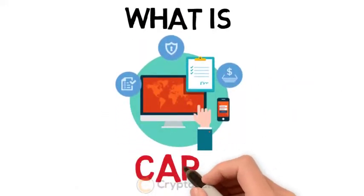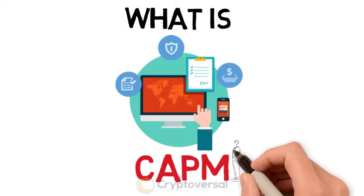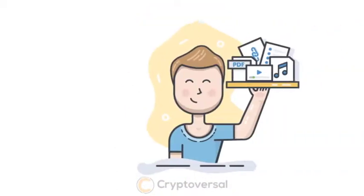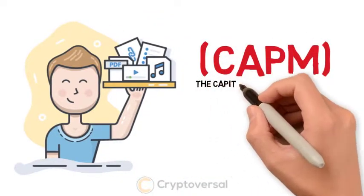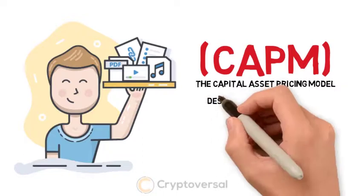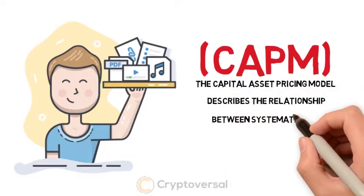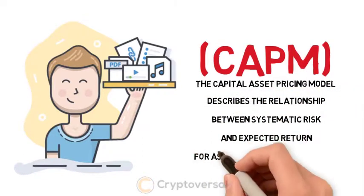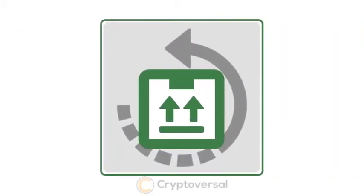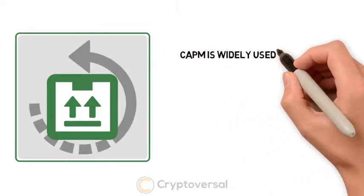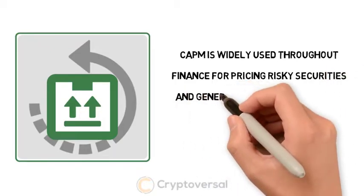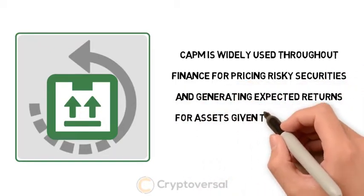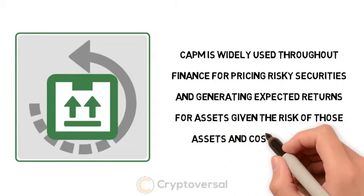What is CAPM? The Capital Asset Pricing Model describes the relationship between systematic risk and expected return for assets, particularly stocks. CAPM is widely used throughout finance for pricing risky securities and generating expected returns for assets given the risk of those assets and the cost of capital.